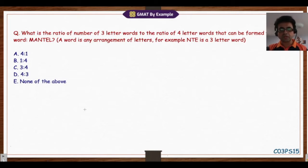One of the goals today is to solve this problem without a lot of calculation, and that's what we're going to try. Let's read through the question. We are given a word which is MANTLE, and we're asked for a ratio of three-letter words to four-letter words that we can form using the word MANTLE.